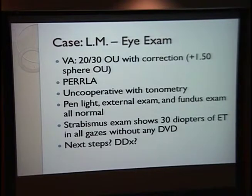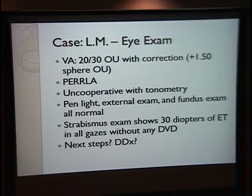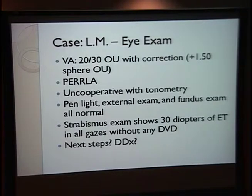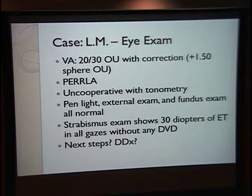For his eye exam: visual acuity was 20/30 in both eyes with correction. His prescription was +1.5 sphere OU. His pupils were unremarkable. He was not a very happy camper, so we couldn't really do tonometry on him. His penlight external exam and fundus exam were all normal. Strabismus exam showed 30 diopters of ET in all gazes without any DVD — so that is a concomitant ET.